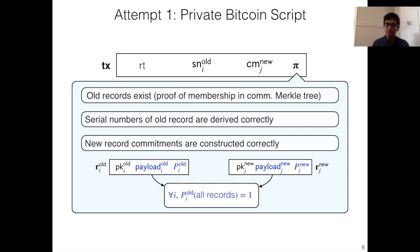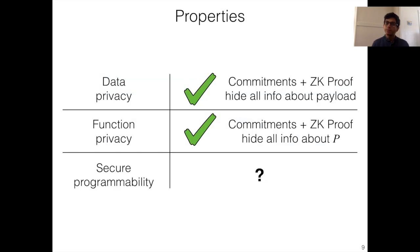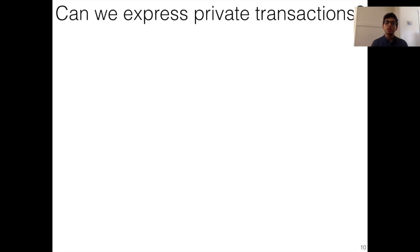Okay, so this is a simple generalization. Let's see if it actually achieves the properties that we want. Okay, from privacy perspective, it works because both data privacy and function privacy are guaranteed by the hiding property of the commitment and the zero-knowledge property of the proof. So this is nice. But what about our strong programmability goals? Can we achieve them here? So let's try to see if this is the case by trying to recover our simple example of private transactions.